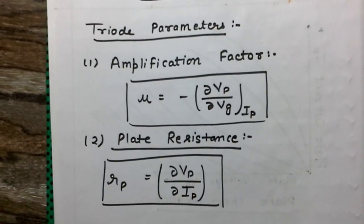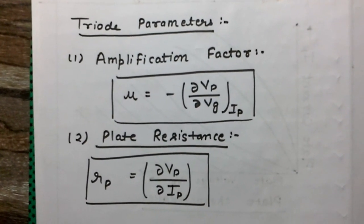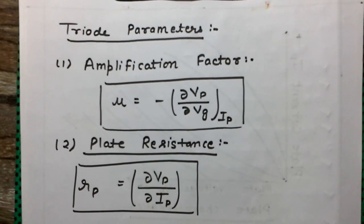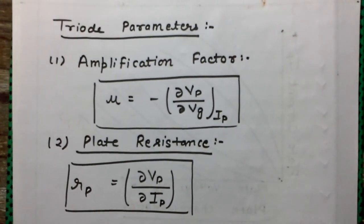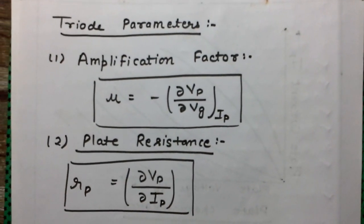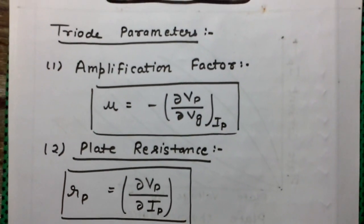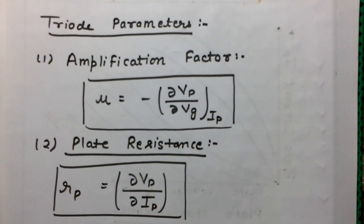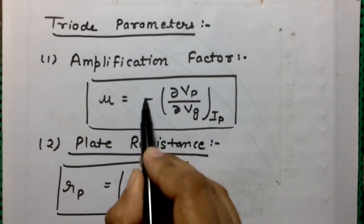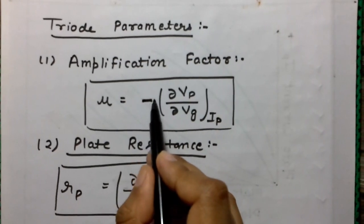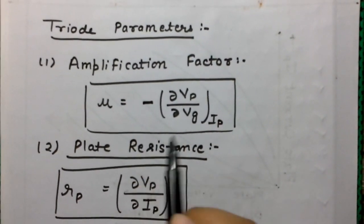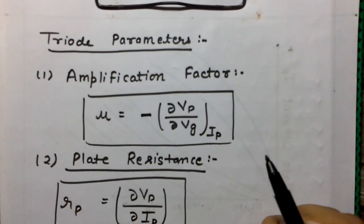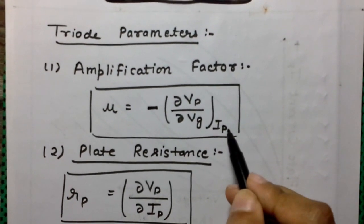To explain further, we describe the triode parameters. There are mainly three triode parameters. Number one is the amplification factor, which tells us how effective the plate voltage and the grid voltage are in controlling the plate current. It is given by the ratio of the change in plate voltage to the change in grid voltage. A negative sign is introduced because Vp and Vg must change in opposite sense to keep the plate current Ip at a constant value.